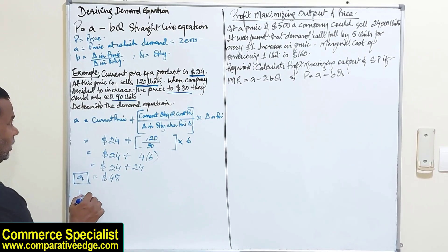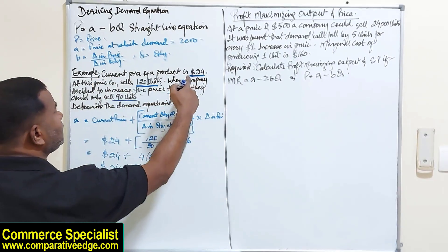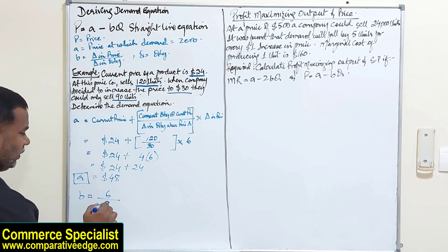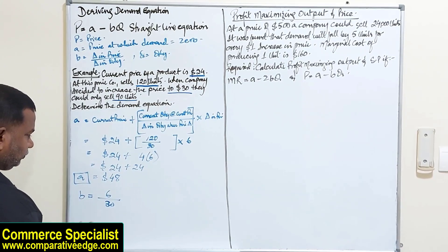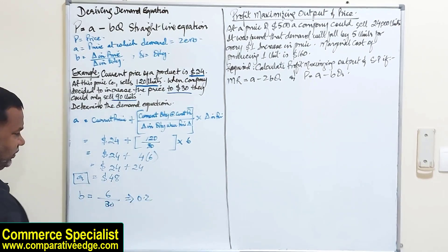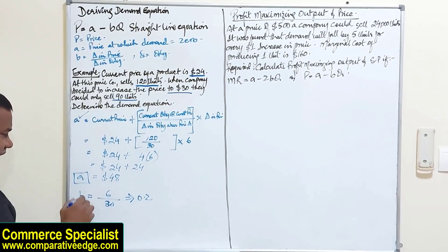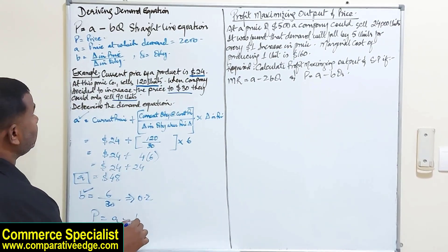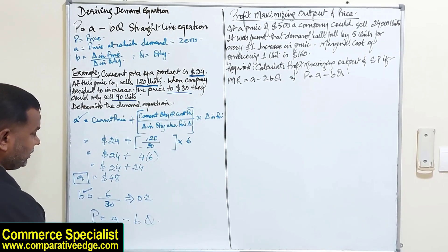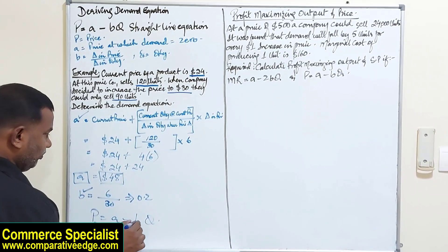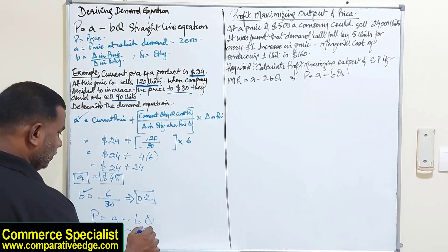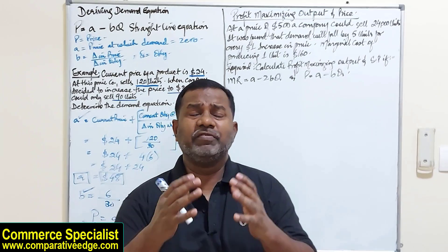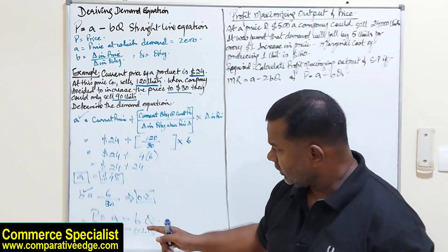Once we have A and B, we can derive the straight line demand equation: P = 48 − 0.2Q. This is your straight line demand equation. The benefit of having it is that we can substitute any quantity to find the price we should be charging, or plug in a price to find how many units we will sell.